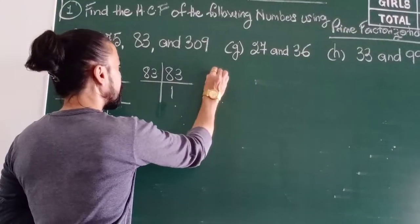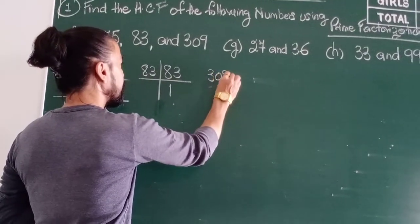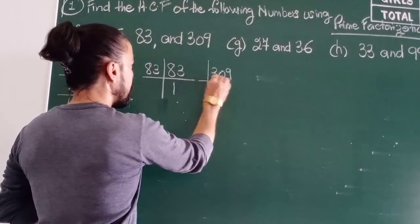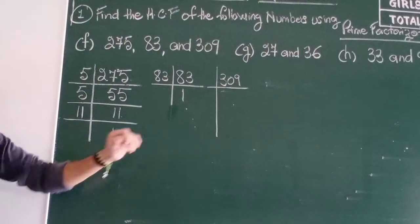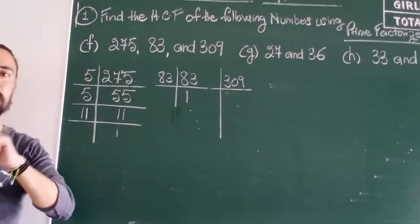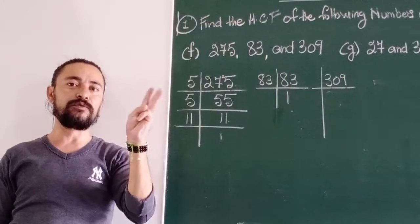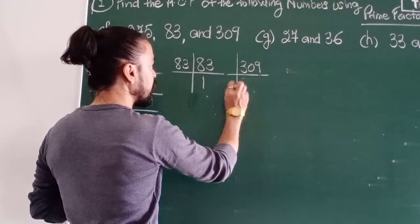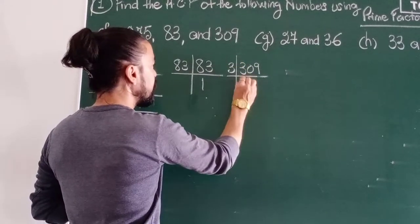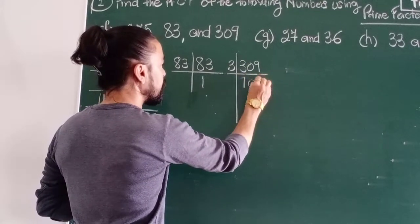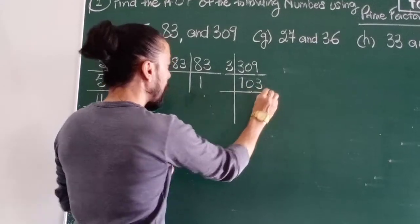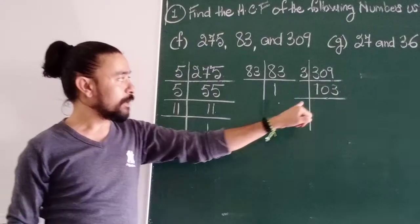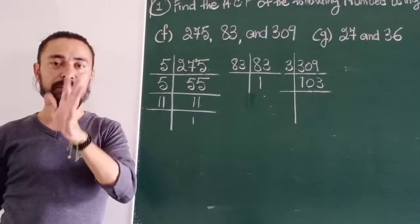Let's go to my next number, 309. Is it divisible by 2? No, because it is ending with 9. To be divisible by 2, you should end with 0, 2, 4, 6 and 8. 3? 3 and 9, 12, yes. 3 ones are 3, 0, 3 threes are 9. 100 and 3, 1 plus 3, 4, not divisible by 3.